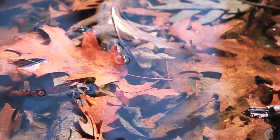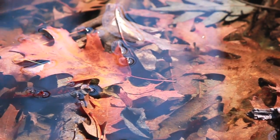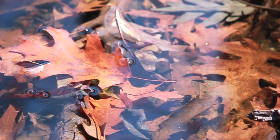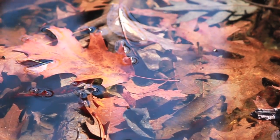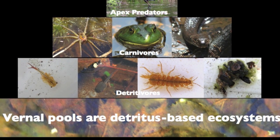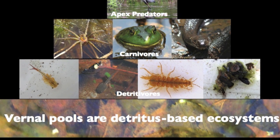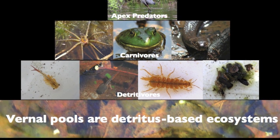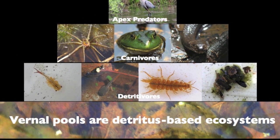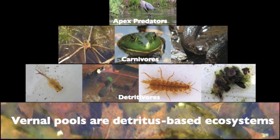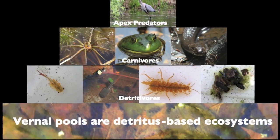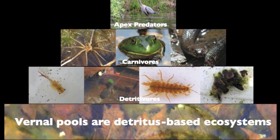Do you see these fallen tree leaves? These are the main source of food and energy for vernal pool organisms. When they fall in the autumn, the dead leaves drop to the bottom of the pool where they become detritus. Caddisflies, isopods, and other species shred the leaves into smaller sized pieces that other organisms can eat to obtain energy.